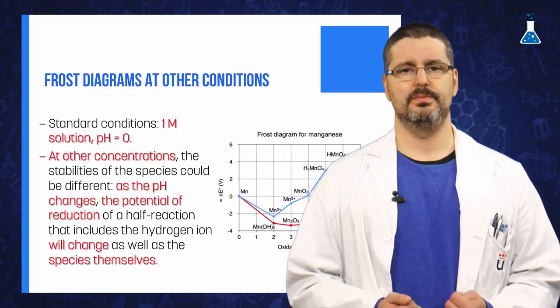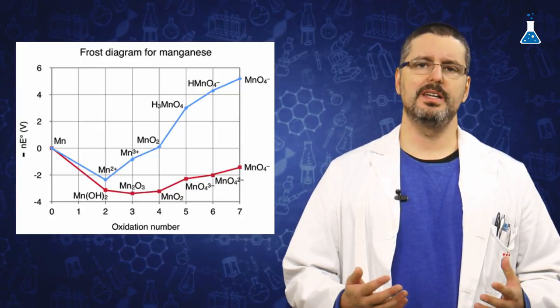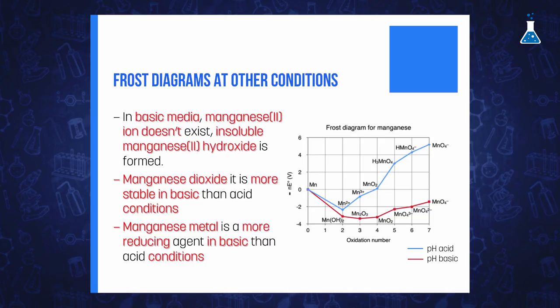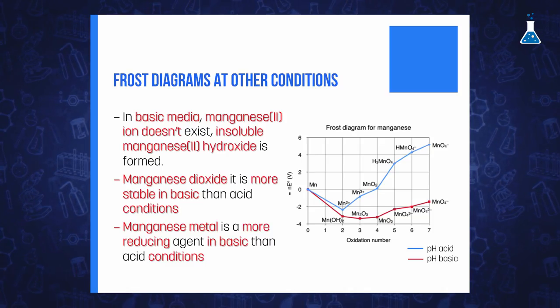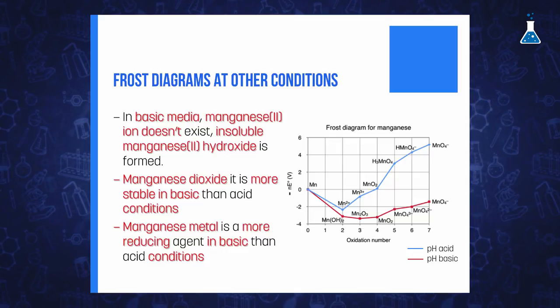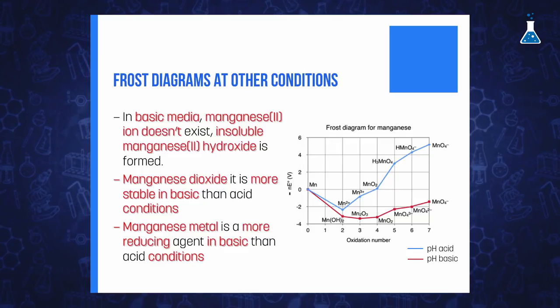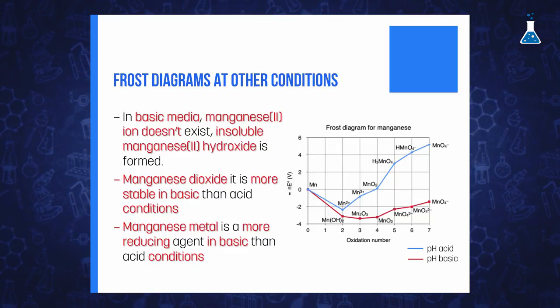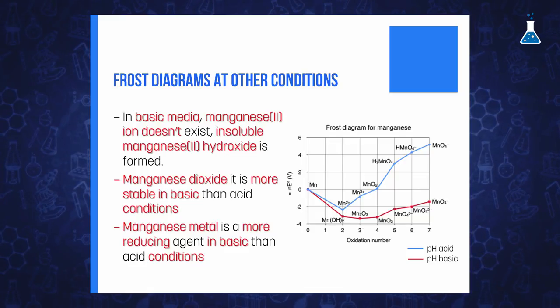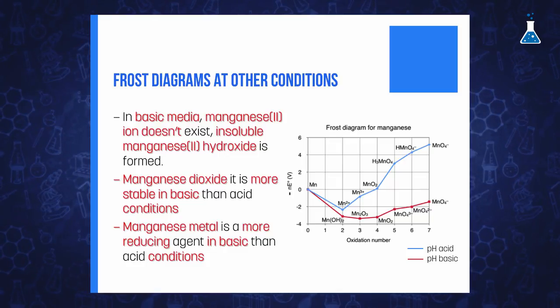This fact can be easily observed in the Frost diagram of manganese in both basic and acidic pH. In a basic media, manganese(II) ion doesn't exist because insoluble manganese(II) hydroxide is formed. It is for that reason that this is the species that appears in the diagram in this condition. We can see, for example, how manganese dioxide is more stable in basic than in acidic conditions, or the different reducing strength of manganese in metal depending on the pH.